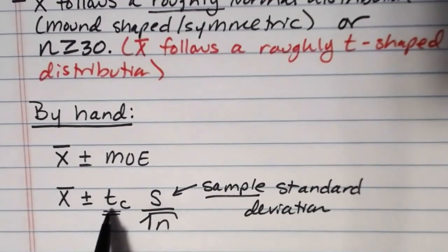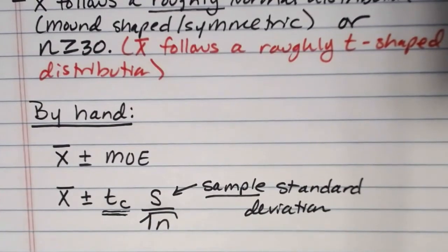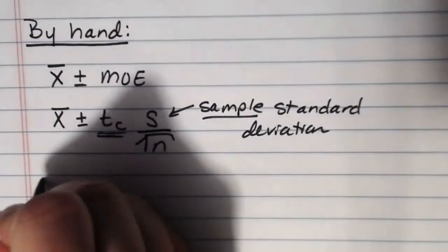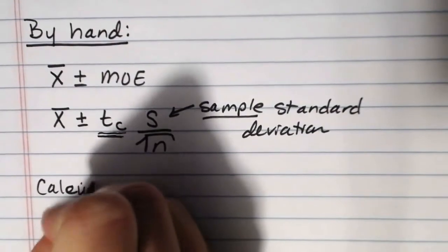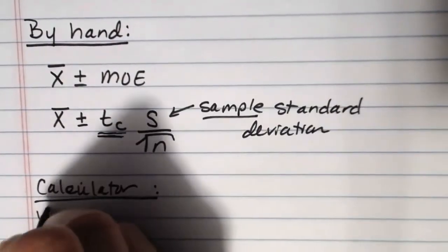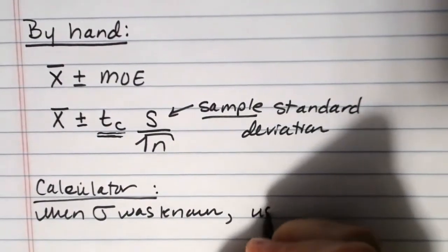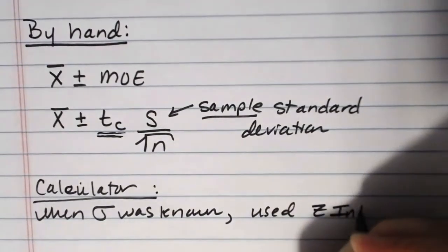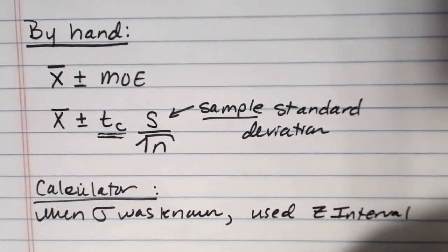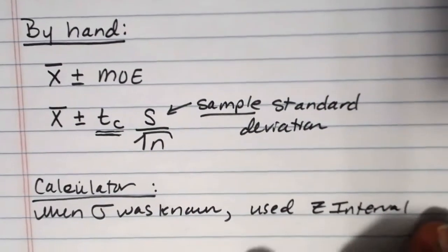Now this t sub c can be found in your book using a table. It's a table in the back of the book actually. It's one of the appendices. There is a t table. That being said again most people probably aren't going to do this by hand. It's by far more common to do this either with a calculator or some type of software. So if we're going to use the calculator, when sigma was known and we wanted to estimate mu, we use the z interval.